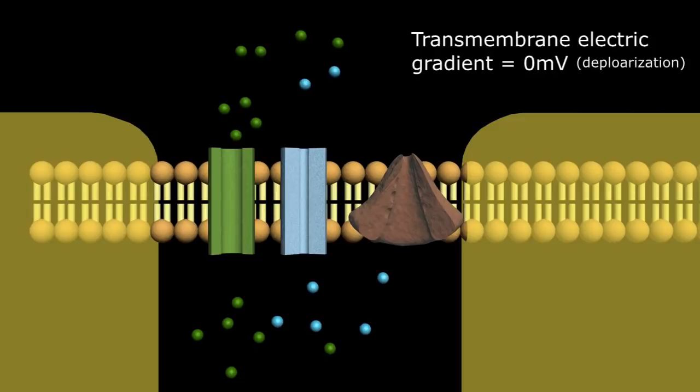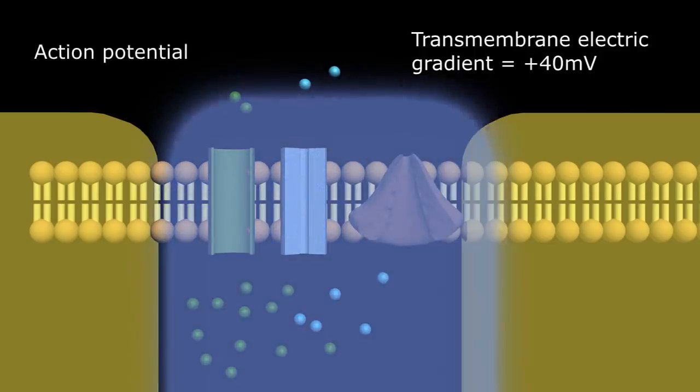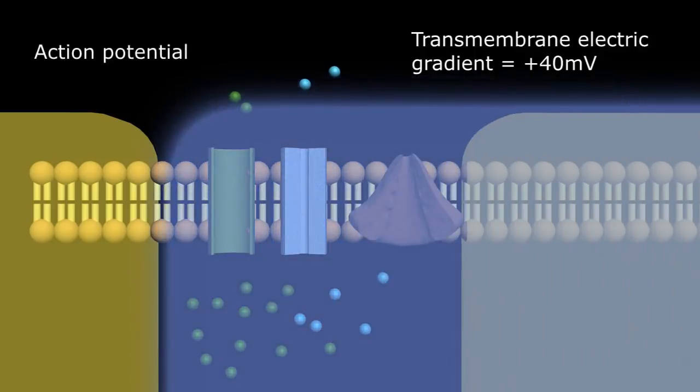Depolarization causes more sodium ions to rapidly flow into the cell, reversing the gradient to approximately plus 40 millivolts, which triggers an action potential and propagates the nerve signal through the next segment of myelin sheath down to the subsequent node of Ranvier, where the process begins again. To immediately stop the propagation of the electric signal, the now positive gradient closes the sodium channels and causes the potassium channels to open, allowing the outflow of potassium ions.